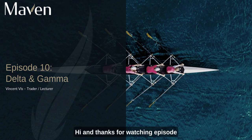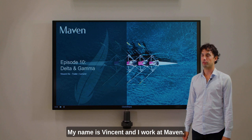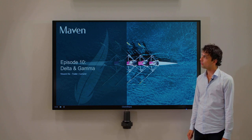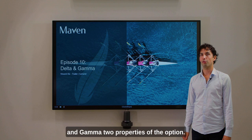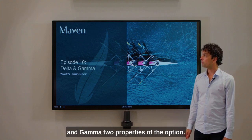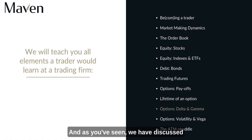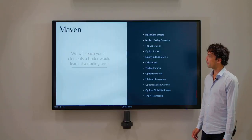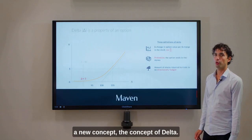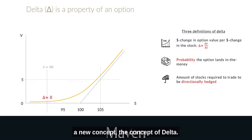Hi and thanks for watching episode 10 of our Trader series. My name is Vincent and I work at Maven. Today I would like to discuss Delta and Gamma, two properties of the option. We have discussed a couple of properties of options already — payoff diagrams and what the value of an option looks like away from expiry. But today I would like to touch upon a new concept: the concept of Delta.